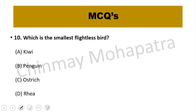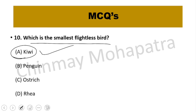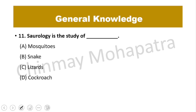Question number 10: Which is the smallest flightless bird? The right answer is the kiwi. Question number 11: Saurology is the study of what? The right answer is lizards.